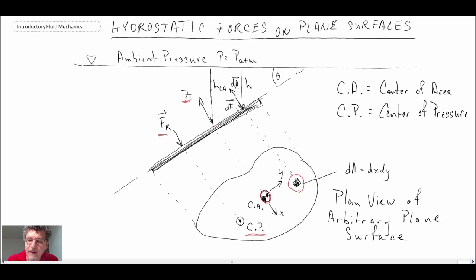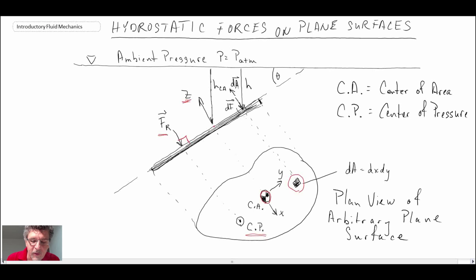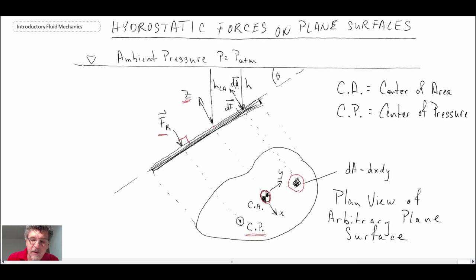One of the things we can also say about the resultant force is that it acts normal to the plate, as we said for hydrostatic forces earlier. Although that vector looks a little crooked, it's supposed to be normal. That's due to the fact that the fluid is not moving for hydrostatic. We're going to do a derivation for the forces on one side of the plate.